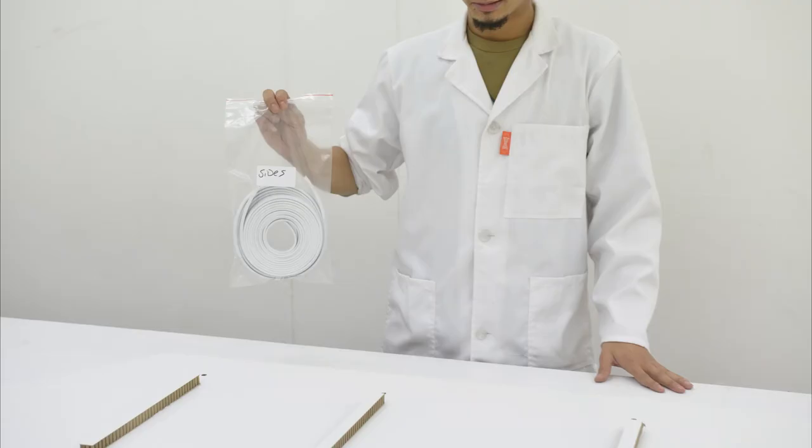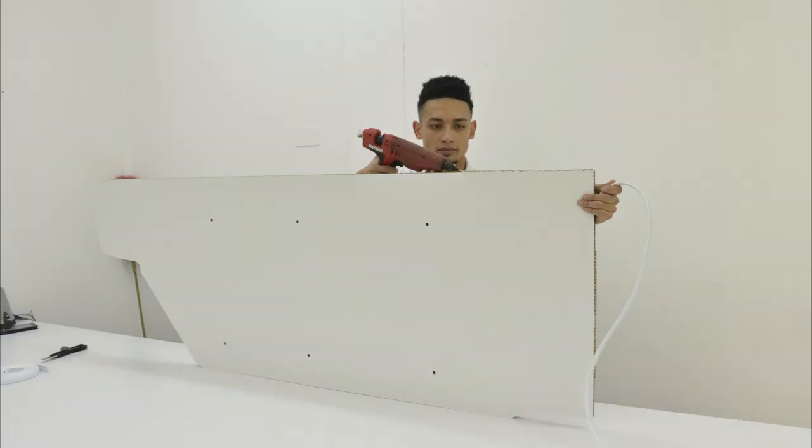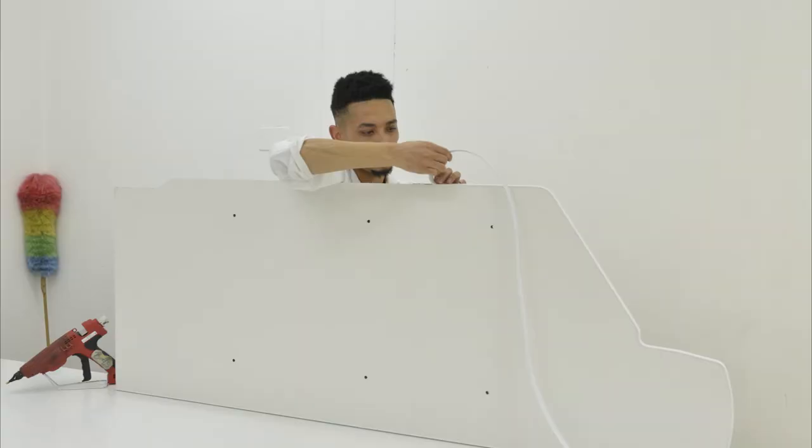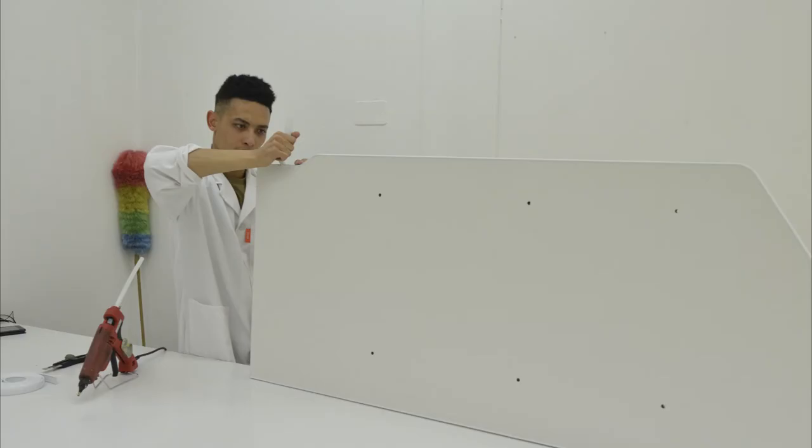This process is then repeated with the two side panels as well and this time we start at the back and the bottom corner. We work our way all around the part until we finish off at the front bottom corner and we trim off the excess edging.